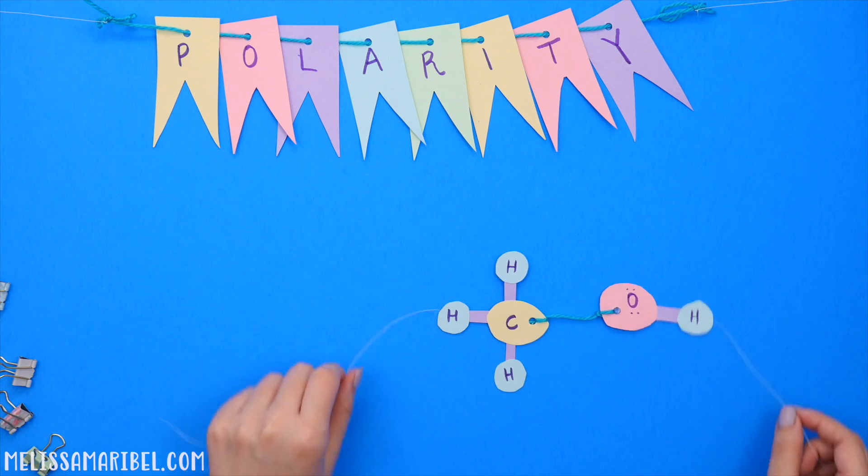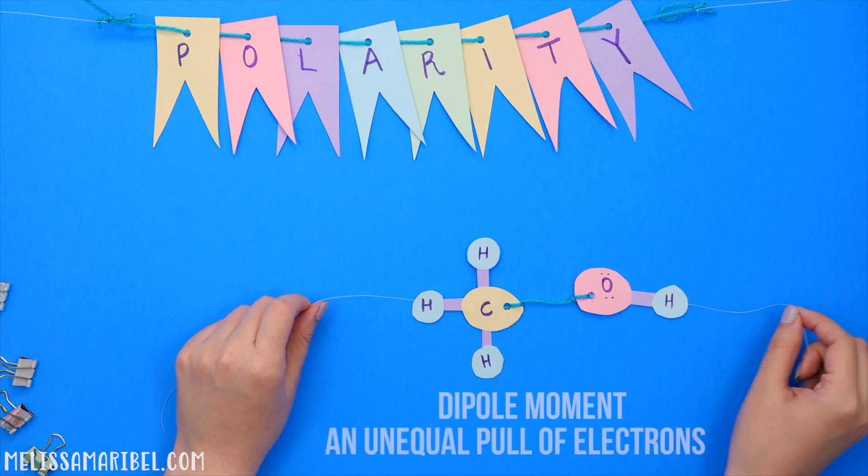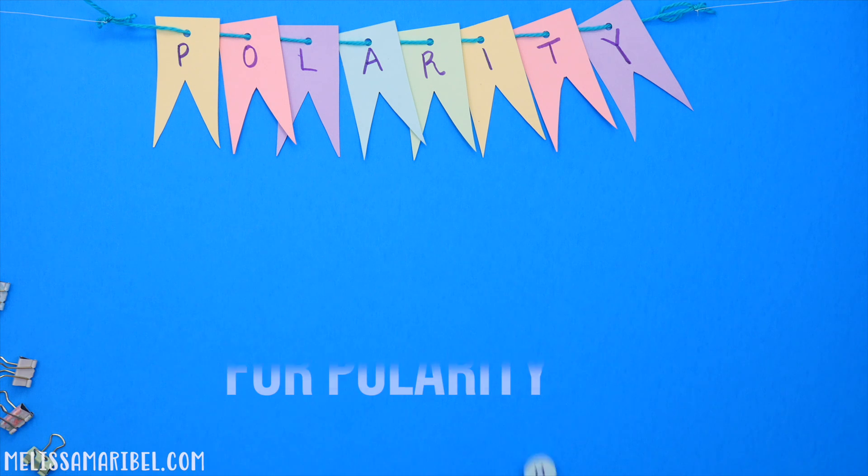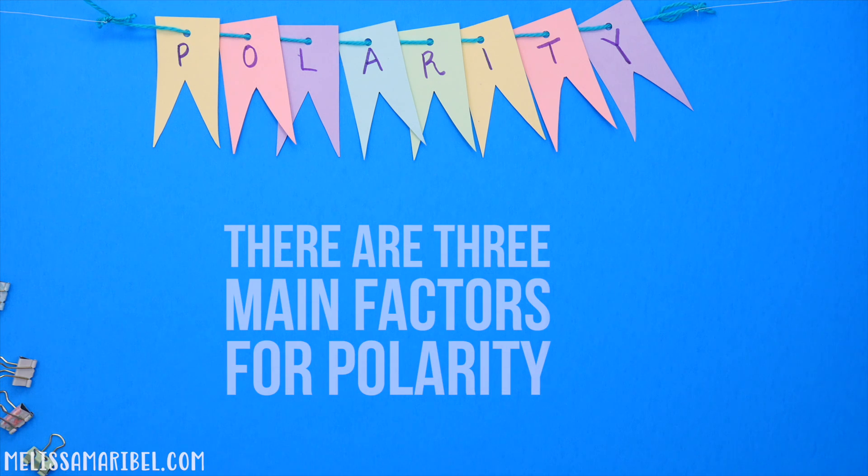A polar structure has a dipole moment which is an unequal pull of electrons. There are three main factors to look at for polarity.